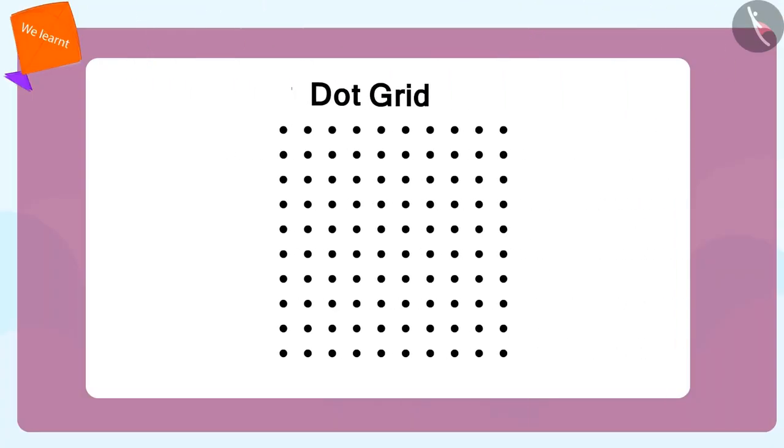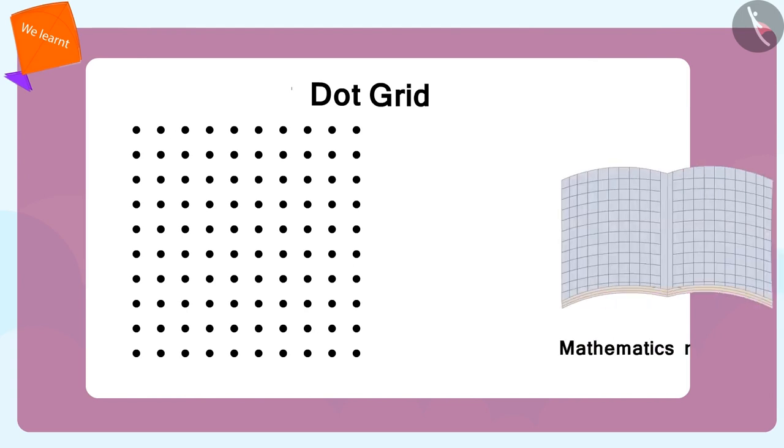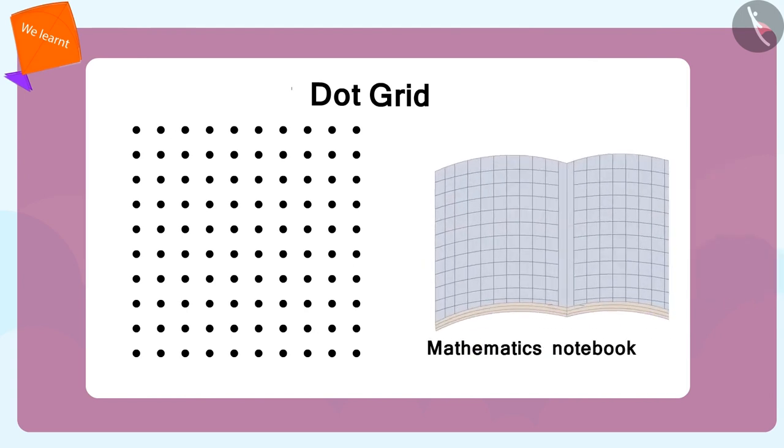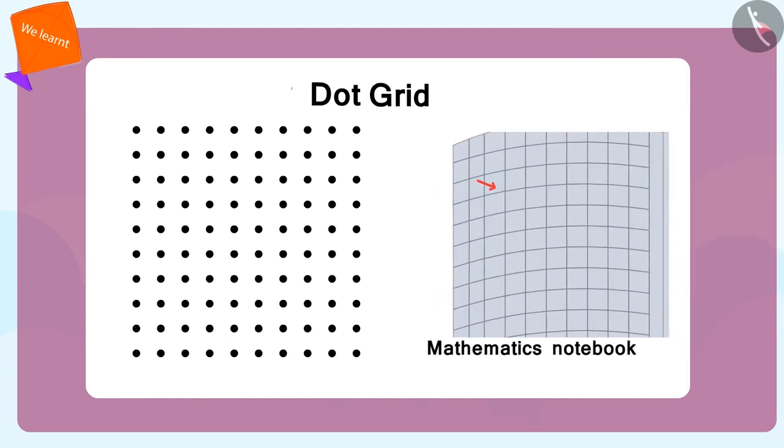I will explain. Suppose, in your maths book, where every line meets, you make a point. It will become a dot grid.